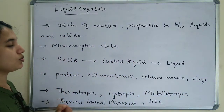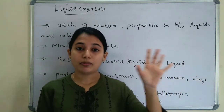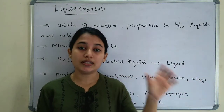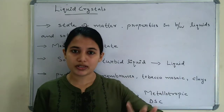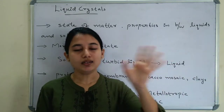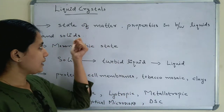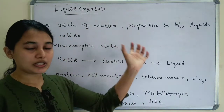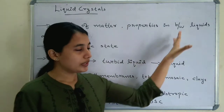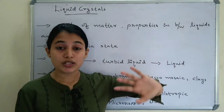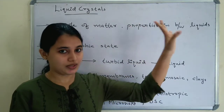What is a liquid crystal? It is a state of matter which has properties in between a liquid and solid. It will have some properties of liquids and some properties of solids. The fluidity of liquid and the optical property of solids are the speciality of liquid crystals.